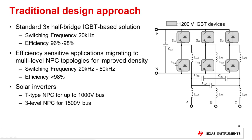In traditional grid tie converters, the power supply is comprised of three IGBT half bridges in a three-phase configuration. The IGBTs are typically in a module package and switch at frequencies up to 20 kHz with efficiencies in the 96 to 98 percent range. This topology is simple to design and has served the industry for many years. As the requirement for higher efficiency and higher density is becoming the norm, grid tie power supplies are migrating to multi-level topologies.